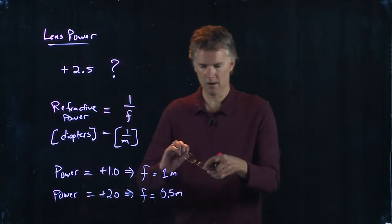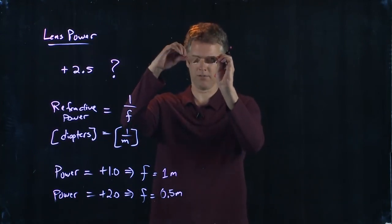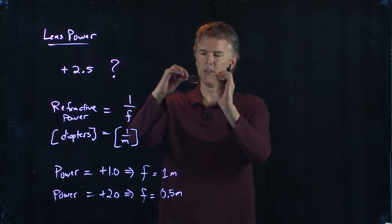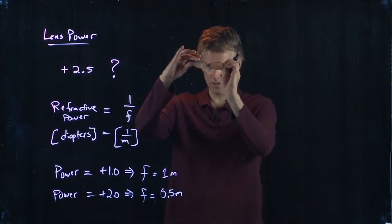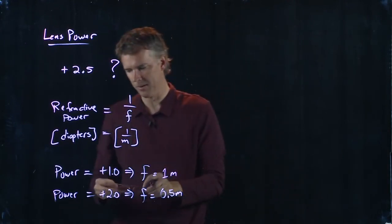So my glasses here, the left eye is a plus 3 and the right eye is a plus 2.5, and that means that the focal length here is about a third of a meter on this side—30 centimeters.